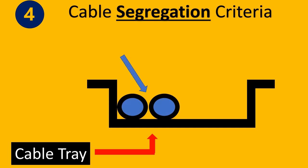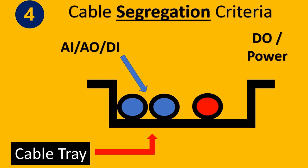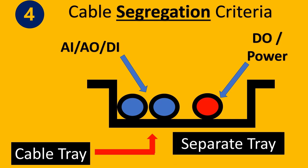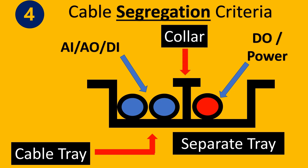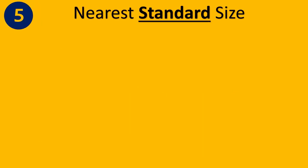Step four is the cable segregation criteria. Imagine your cable tray has AI/AO/DI cables. If a power cable carrying high current is also present, you don't want it to interfere with your analog input or analog output cables. So you either have a separate tray or place something called a collar in between so that interference doesn't occur. This also affects how much space you need and whether you need one cable tray or multiple cable trays.